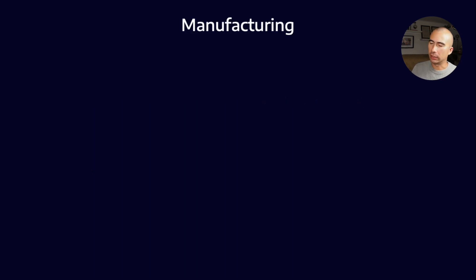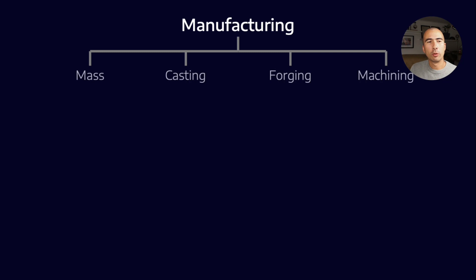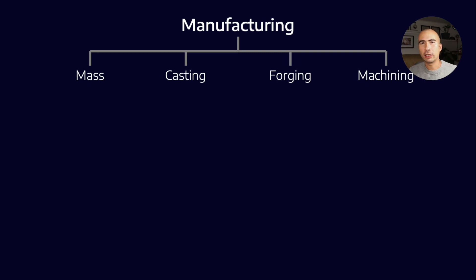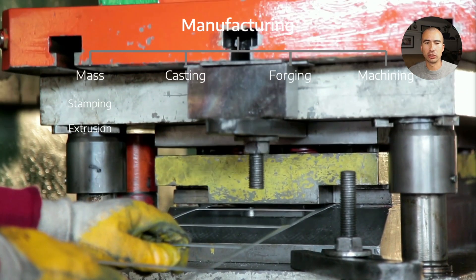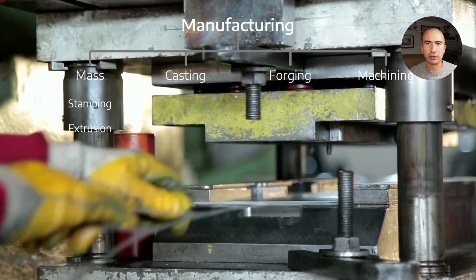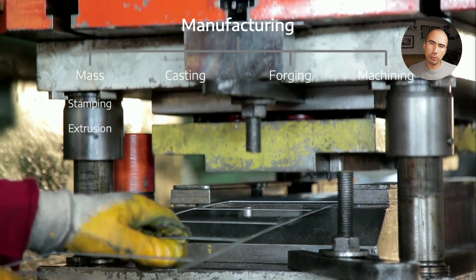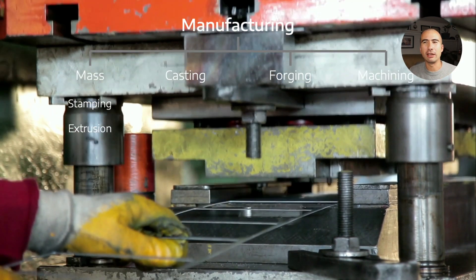There are many different ways to classify gear manufacturing methods. I'm going to use one classification that breaks everything into mass manufacturing, casting, forging, and machining processes. Mass manufacturing is really about enabling mass production of gears on a massive scale where you're not looking for high accuracy or a high surface finish — things like stamping or extrusion, where you can stamp out a whole bunch of gears one after another. That would be used in cases where you don't need very good tolerances.